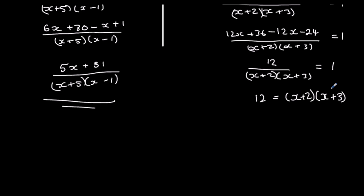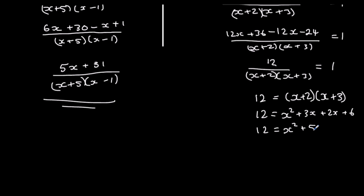Then we can expand this bracket. So 12 equals x squared plus 3x plus 2x plus 6, which simplifies to 12 equals x squared plus 5x plus 6. And whenever we've got a quadratic — this is a quadratic, so it's got an x squared — we need to make it equal to 0. So we're going to take the 12 off: 0 equals x squared plus 5x minus 6.